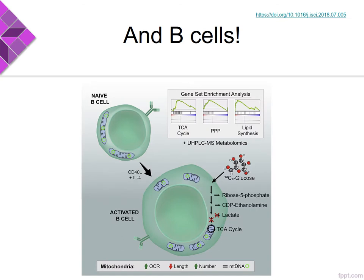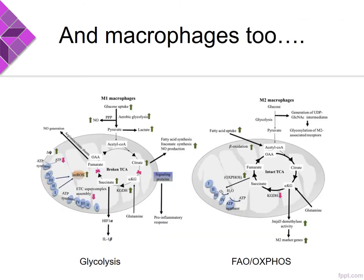Less well understood is the role of the mitochondria in B-cells, B-cells being responsible for antibody production. And that's actually what I'm going to end up focusing on, because most of the clinical data reflects B-cell dysfunction. But I do also want to mention that the innate immune system is also impacted by mitochondria, and I think that's best exemplified by looking at macrophages.